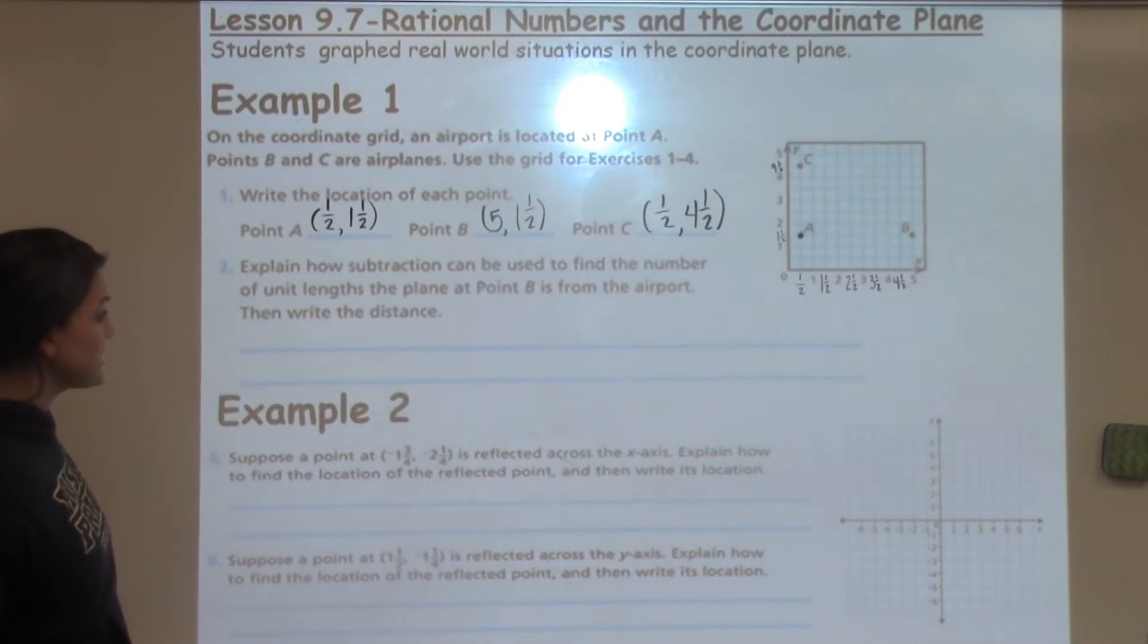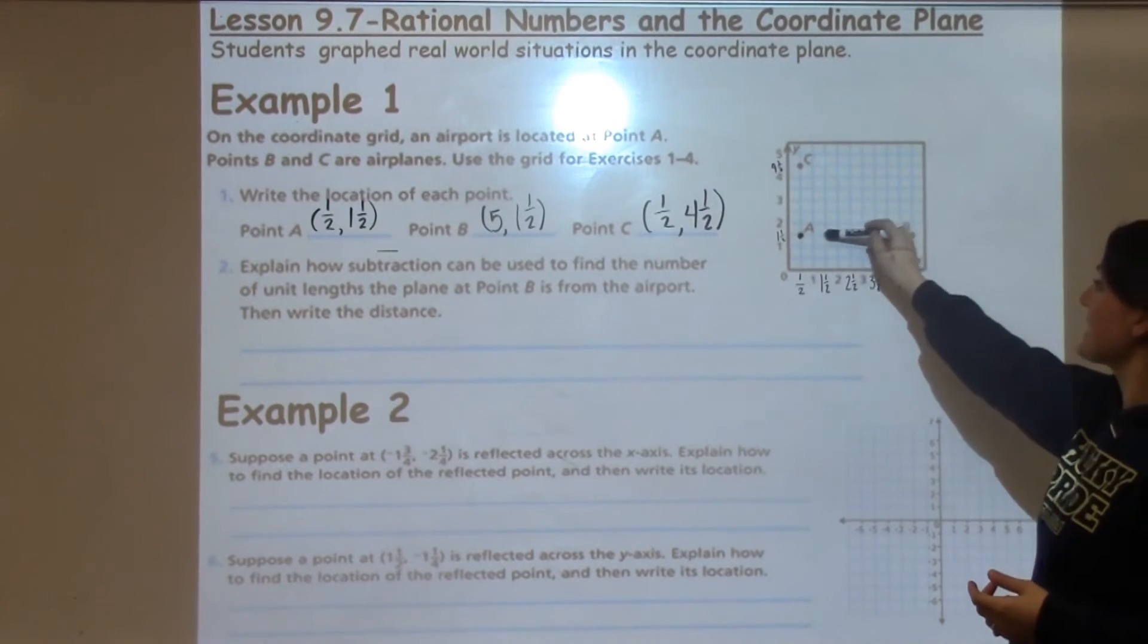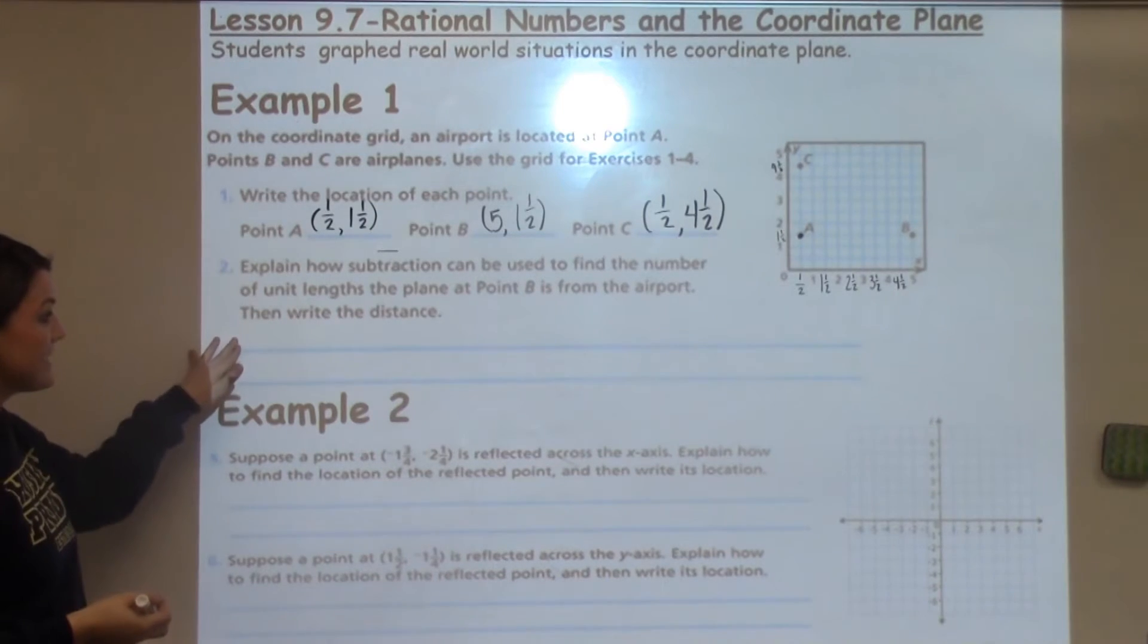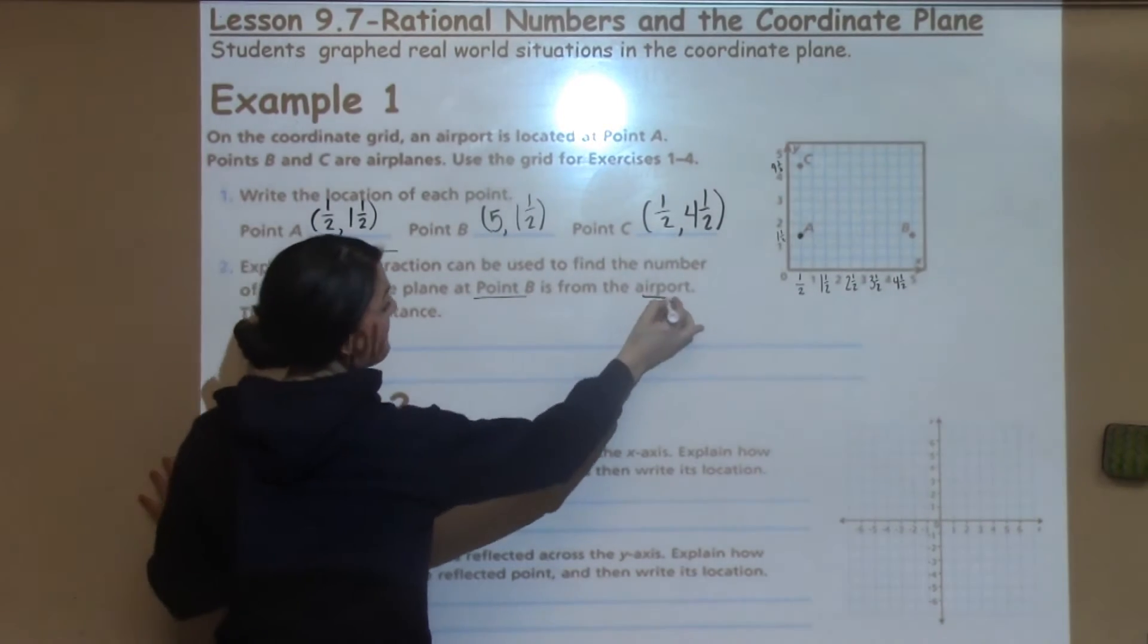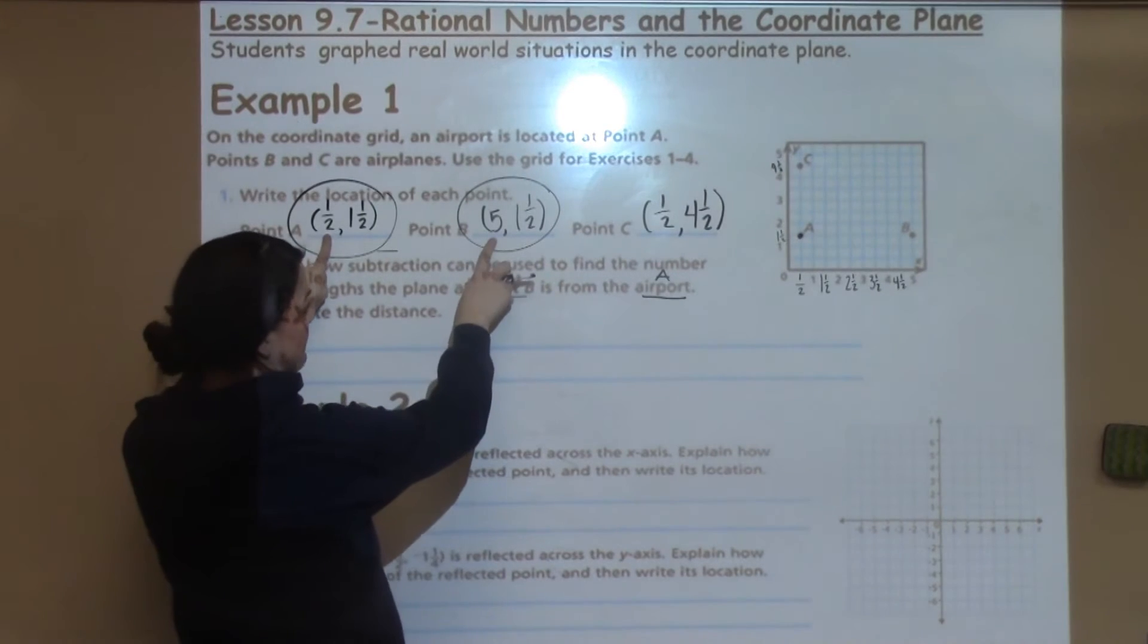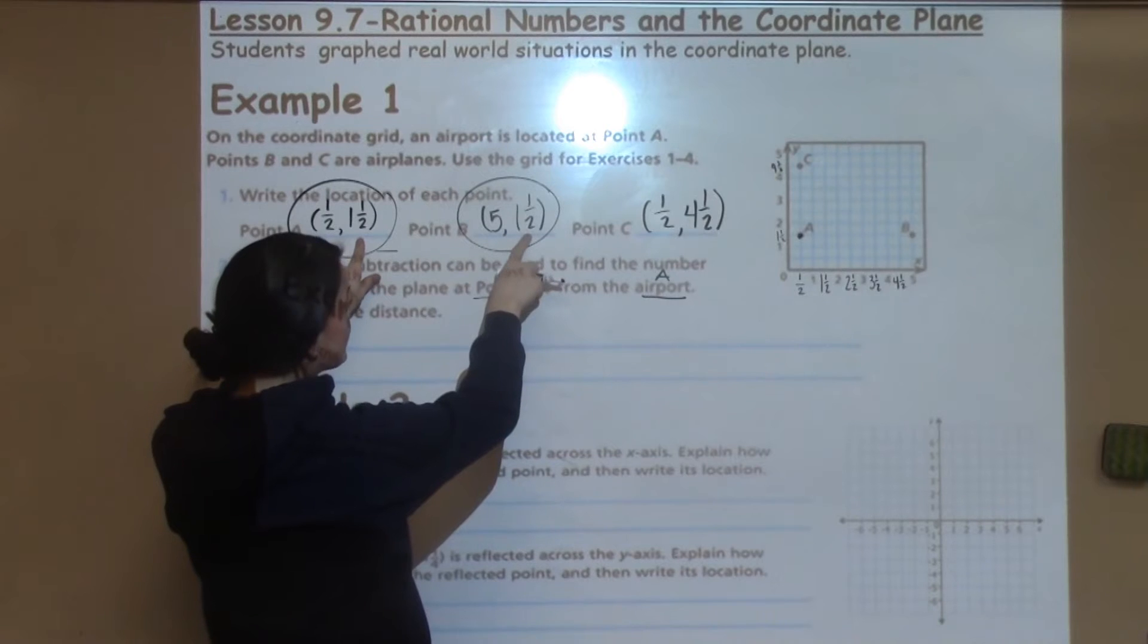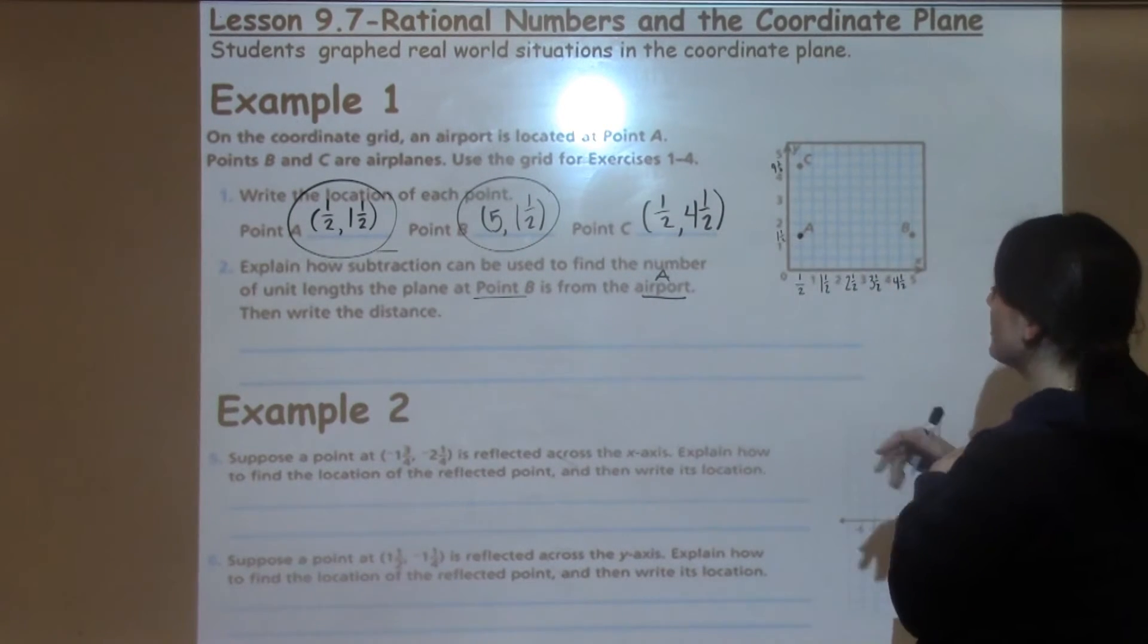Example 2 says, explain how subtraction can be used to find the number of unit lengths the plane at point B is from the airport. Students might say, that's pretty simple, I can just count my lines over and say B is this far away from A, which is true and that would be an appropriate strategy, but this question asks us to use subtraction to figure out how we could do that. So I really want to look at point A and the airport. I'm going to look at point B and point A and their numbers. I see that their x-axis numbers are different, which makes sense because they are far apart when I'm looking at them horizontally, but their y-axis numbers are actually the same.